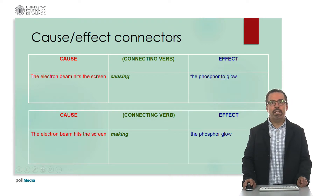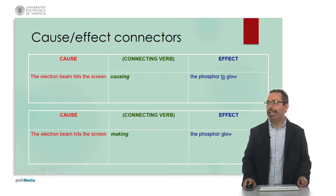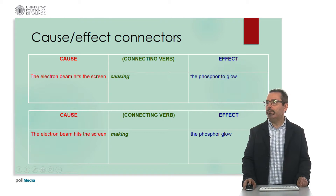We can also use connecting verbs in the -ing form, and typically we use for this purpose the verbs cause and make. If we use the verb cause, then in the effect part of the sentence we must put the particle to. Here we have the example: the electron beam hits the screen, causing the phosphor to glow. But if we use the verb make, we don't need to add any particle. As in the example with exactly the same meaning: the electron beam hits the screen, making the phosphor glow.